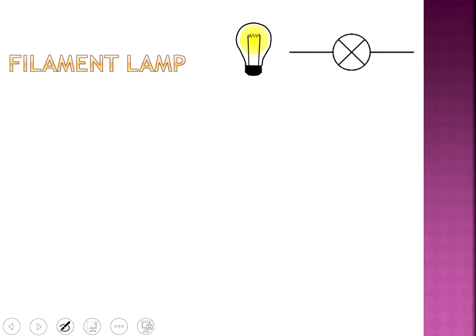A couple of simple things you might wind up seeing inside of a circuit. We are really familiar with the filament lamp. We have used the filament lamp a number of times already. The symbol for that filament lamp that you're going to see is this right here, the circle with the X through it. At this point, that one's not a surprise. We've seen that one plenty.